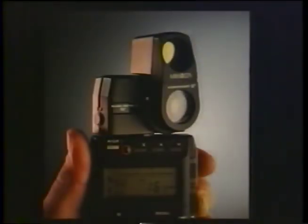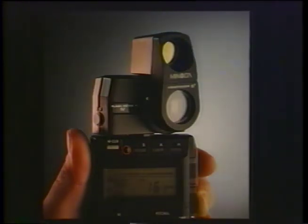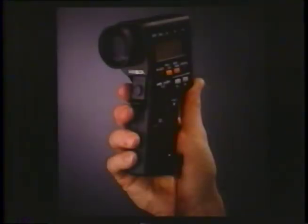Here's the same meter with a 5 degree reflective attachment which allows precise spot readings within a 5 degree area. And this is a new Minolta 3F which is a 1 degree spot for extremely critical work. This meter reads ambient light as well as flash.